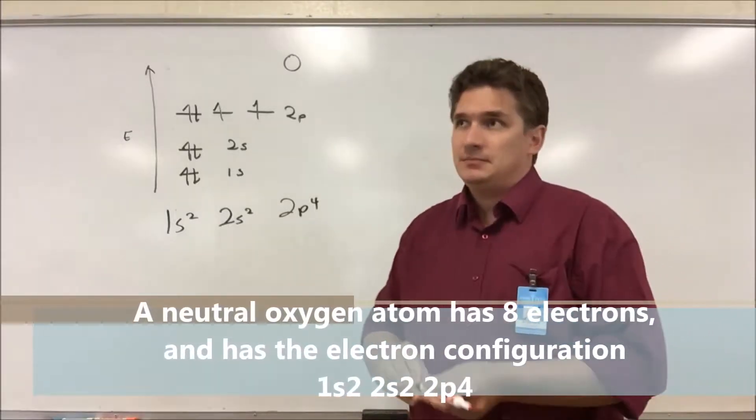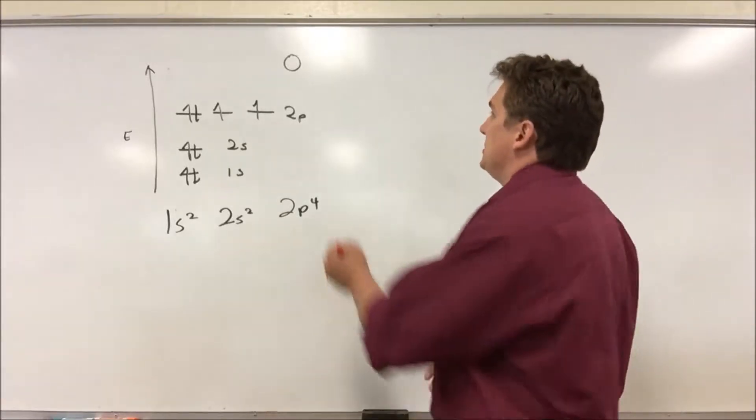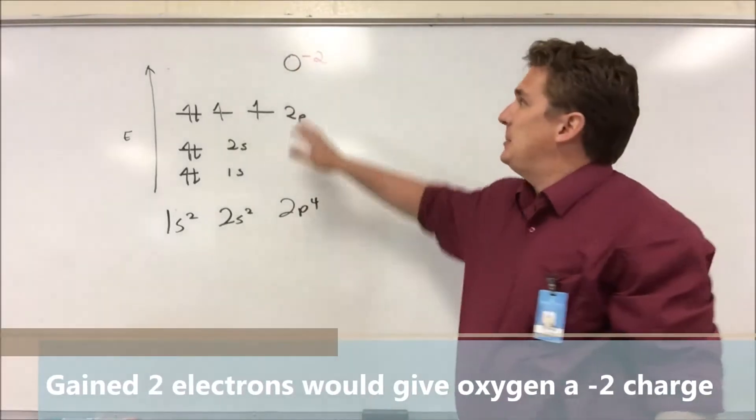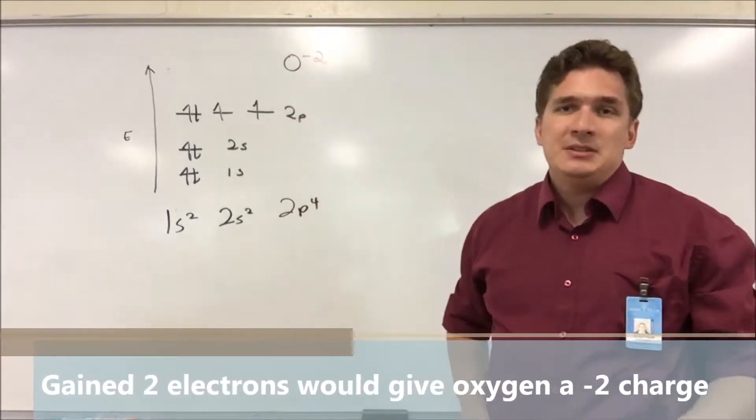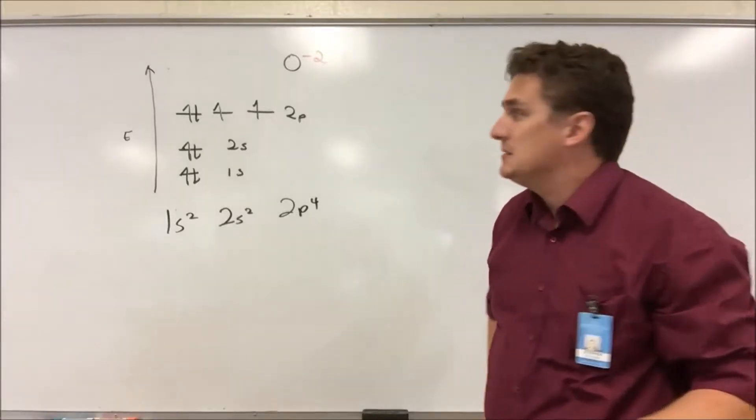We've got eight protons in oxygen. If we add two electrons, the net charge here is going to be a negative two. And so our charge here is going to be represented on the top right with a number. And this minus two tells us how many electrons we've gained if it's negative or how many electrons we've lost if it's positive.